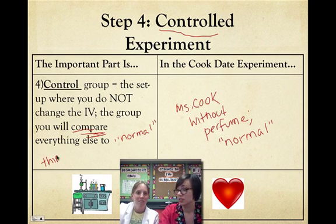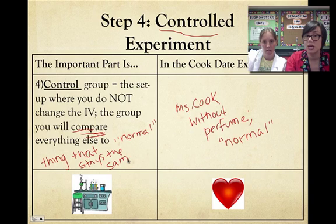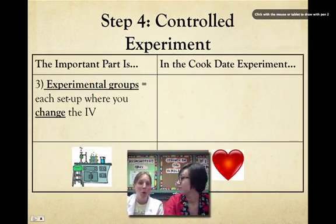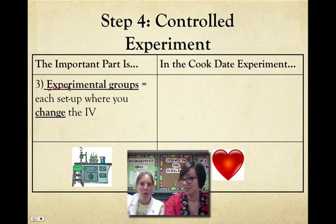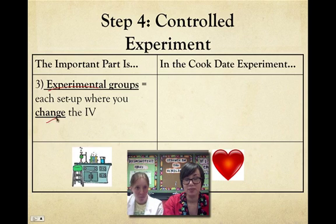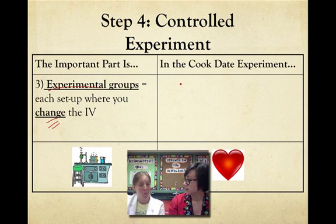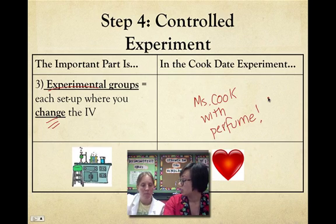A good thing to remember about control groups: it's the thing that stays the same — you need it to compare. If you can't find the control group, that means it's not a good experiment. The next important part of a controlled experiment is the experimental group — the name gives it away. It's the group that receives the experimental treatment, where you change something. In our experiment, the experimental group is Ms. Cook with perfume on — that's the group that received the IV, the change, the manipulation.